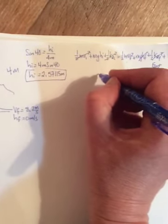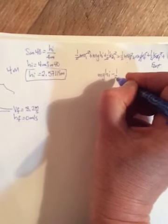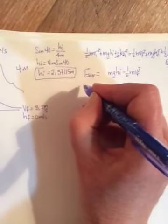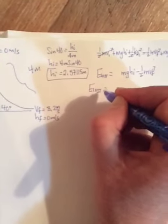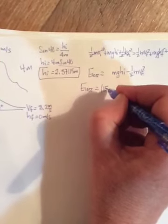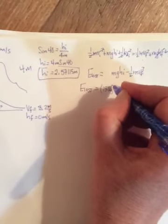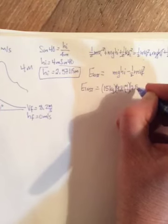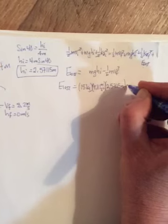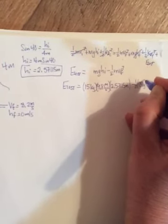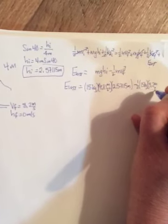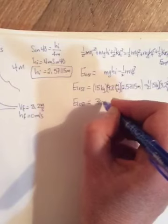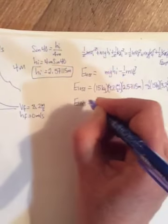So we take our 1/2 mvF over. So it will become mghI minus 1/2 mvF squared. And that will be our E lost. Can't cancel out the m's, because there isn't one in the E lost. So fill in your numbers. I think they must have told us 15 kilogram kid. It's 33 pounds. This child is very tiny. 9.81 meters per second squared. Our height is 2.57115 meters. Minus 1/2, 15 kilograms. And at the bottom, 3.2 meters per second squared. When you do this, you get an E lost of 301.545 joules.